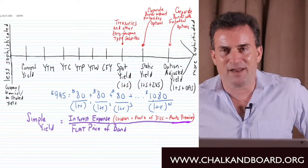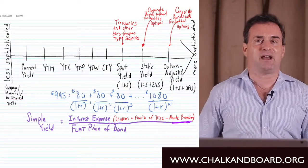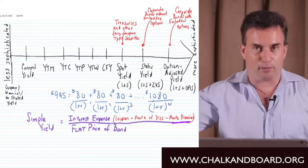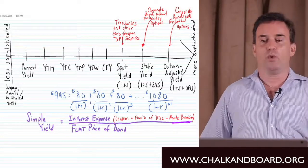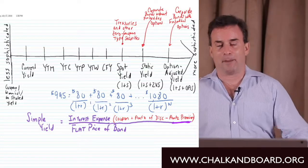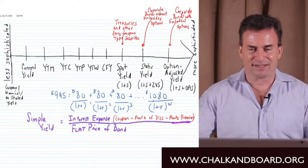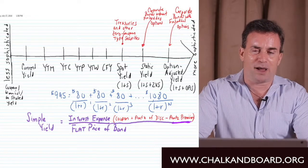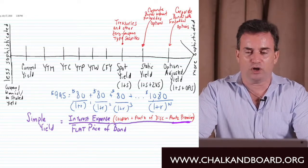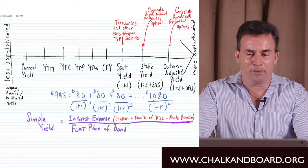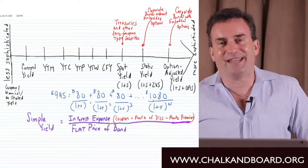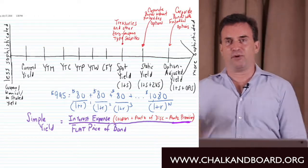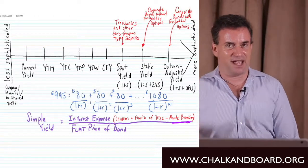So when the bond has no embedded options and it is issued by a corporation, we call these option-free bonds. Because they have no embedded call or put option — they are non-callable and non-putable — we need to come up with the appropriate discount rate for the cash flows.